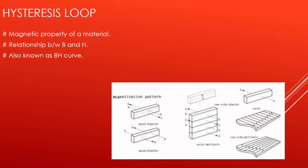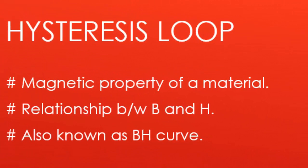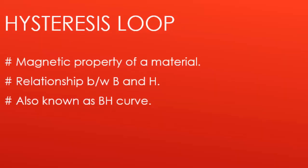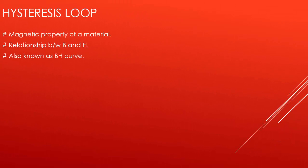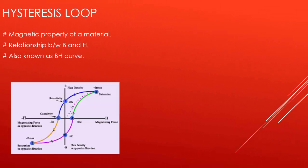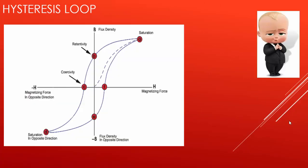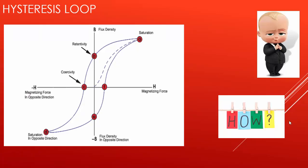Point number one is that the loop shows the relationship between induced magnetic flux density that is denoted by B and the magnetizing force that is denoted by H. So the hysteresis is also known as BH Loop or BH Curve. This is how the BH curves look like. But the question is how is it made like this?